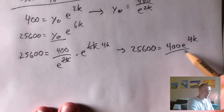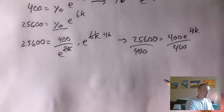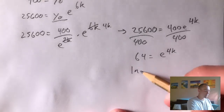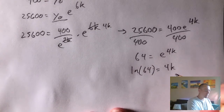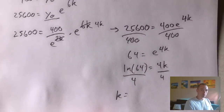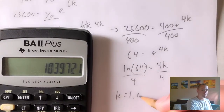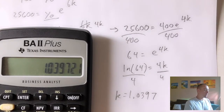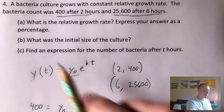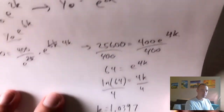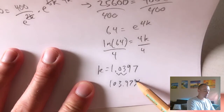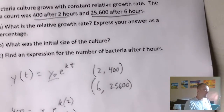Dividing both sides by 400 gives us 64 equals E to the 4K. Then if we take the natural log of both sides, that cancels out the E, giving us natural log of 64 equals 4K. Dividing by 4 gives us K equals natural log of 64 divided by 4, which if you plug that into a calculator gives you approximately 1.0397. K represents the relative growth rate. Since part A asks us to express it as a percentage, we move the decimal over two places, giving us 103.97% per hour.